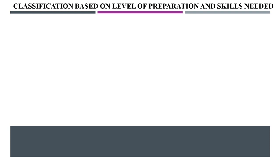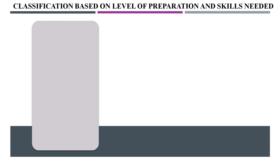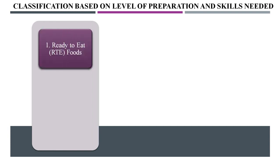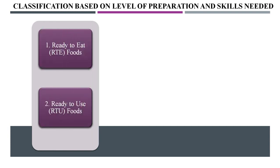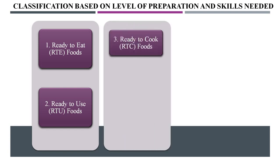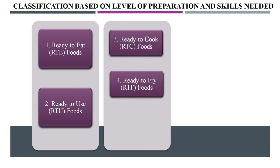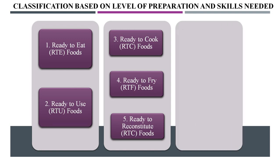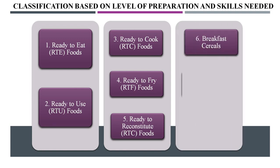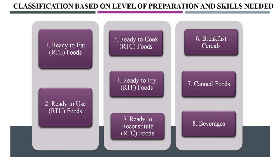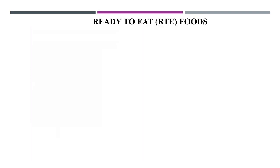The second classification is based on level of preparation and skills needed. The types include: ready-to-eat foods, ready-to-use foods, ready-to-cook foods, ready-to-fry foods, ready-to-reconstitute foods, breakfast cereals, canned foods, and beverages. Ready-to-eat foods are foods that can be directly consumed from the package with or without warming or thawing, and without preparation.